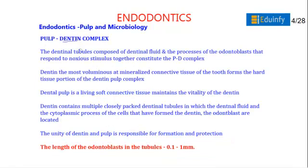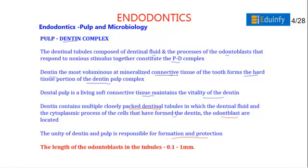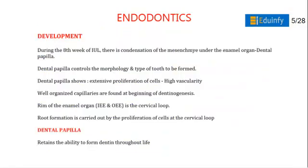The pulp-dentine complex: dentinal tubules are composed of dentinal fluids and the processes of odontoblasts, which respond to noxious stimuli — together constituting the pulp-dentine complex. Dentine is the mineralized connective tissue forming the hard portion of the complex. Dental pulp is the soft tissue that maintains the vitality of the dentine. Dentine contains multiple closely packed dentinal tubules, with odontoblasts located within them. The length of odontoblast processes in the tubules is 0.1 to 1 mm.